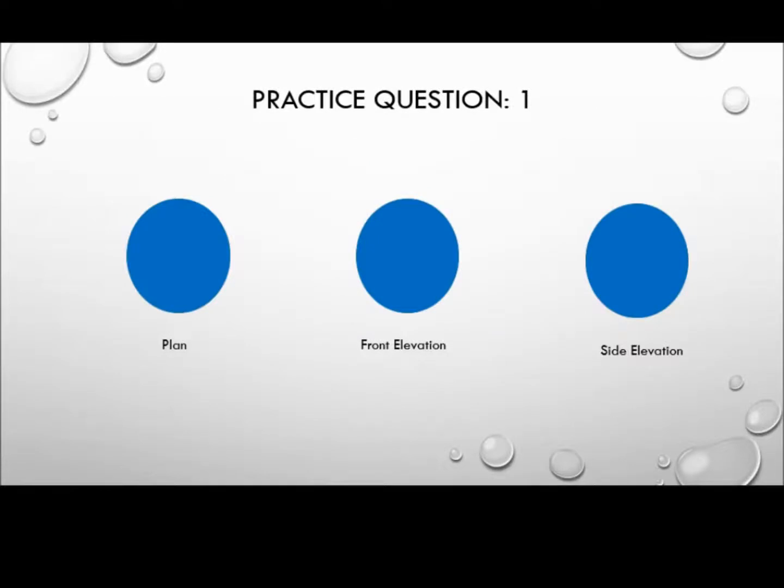So much for the theory — let's have a go at putting this into practice. If you're looking directly top-down, directly from the front, and directly from the side, and from whichever angle you look you only see a circle, what three-dimensional object are you looking at?